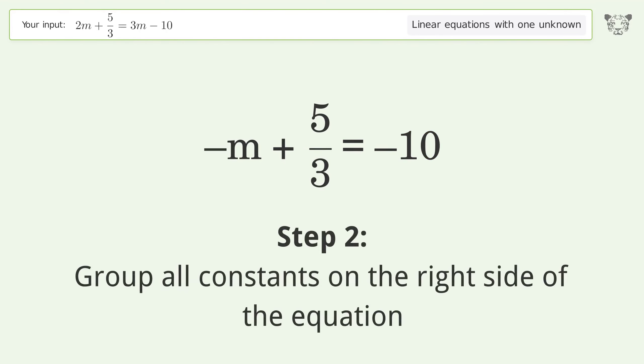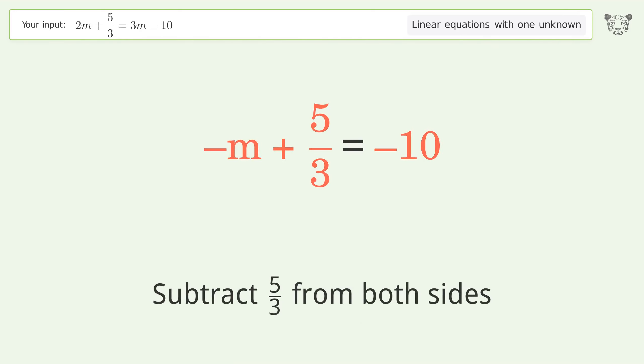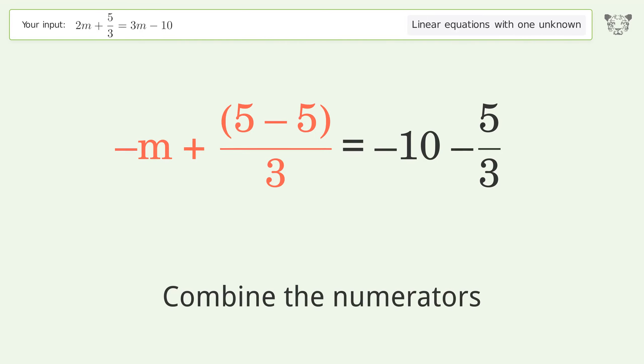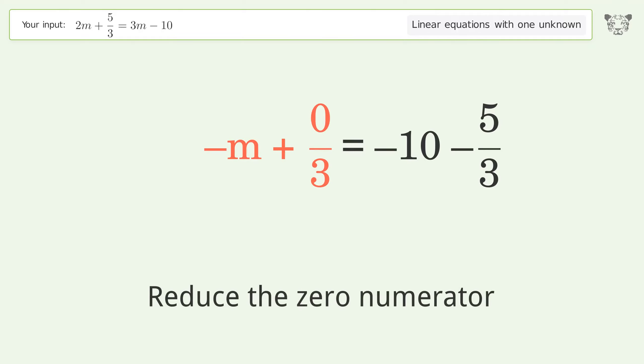Group all constants on the right side of the equation. Subtract 5 over 3 from both sides. Combine the fractions. Combine the numerators. Reduce the zero numerator.